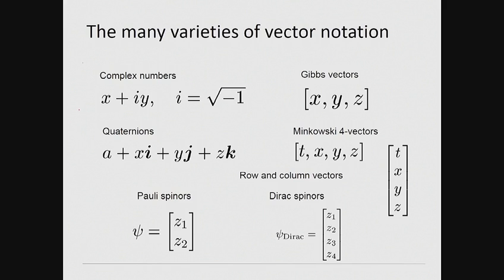The Gibbs vector system is often supplemented by complex numbers used in describing electrical circuits, quaternions for rigid body rotations, Minkowski four vectors for space-time, and complex vectors referred to as Pauli spinors and Dirac spinors in quantum mechanics.